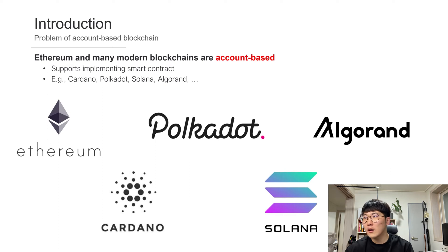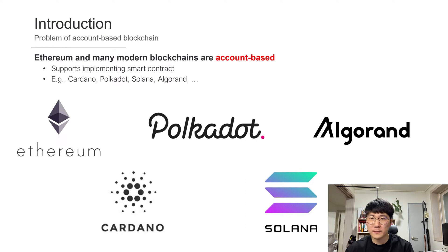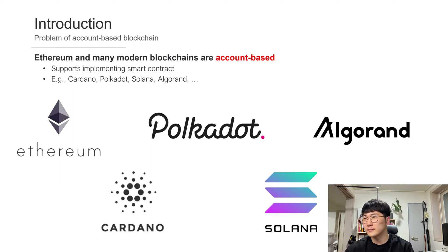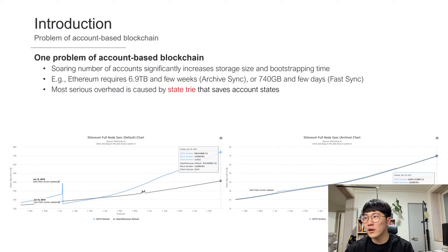These days, account-based blockchains like Ethereum, Cardano, Polkadot, Solana, and Algorand have become popular. This is because the account-based model supports smart contracts, a tiny program that allows people to program money themselves. Due to the smart contracts, ordinary people can mint cryptocurrencies, assets, derivatives, and many things on the blockchain. However, the account-based model suffers from a huge storage size and long synchronization or bootstrapping time.